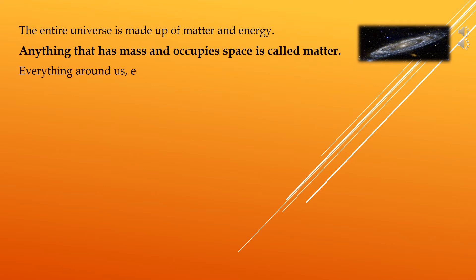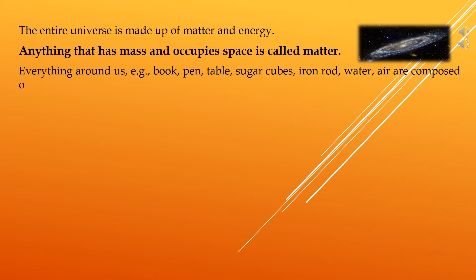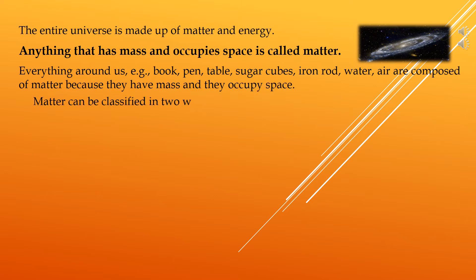Everything around us, for example, book, pen, table, sugar cubes, iron rod, water, and air, are composed of matter because they have mass and they occupy space. Matter can be classified in two ways: physical classification of matter and chemical classification of matter.